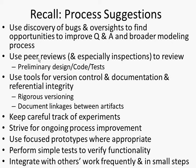Another issue is using tools for version control. It's really important when you build up models to build them incrementally and save away successive versions. The easiest way is to literally save version one, version two, version three. The best way is to have a formal version control system that saves successive versions and documents linkages between artifacts.